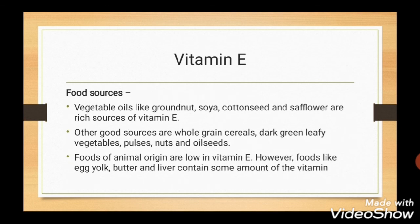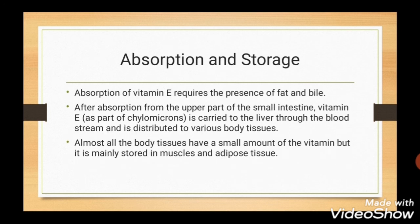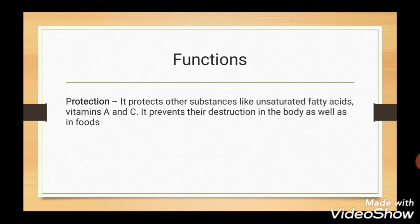Vitamin E. Food sources rich in Vitamin E include vegetable oils like groundnut, soya, and cottonseed oil. Other good sources are whole grain cereals, dark green leafy vegetables, pulses, nuts, and oilseeds. Foods of animal origin are low in Vitamin E, but egg yolk, butter, and liver contain some amount. Absorption of Vitamin E requires the presence of fat and bile. After absorption from the upper part of the small intestine, Vitamin E is carried to the liver and then distributed to various body tissues. It is mainly stored in muscles and adipose tissues. The main function of Vitamin E is protection — it protects unsaturated fatty acids, Vitamin A, and Vitamin C from destruction in the body as well as in food.